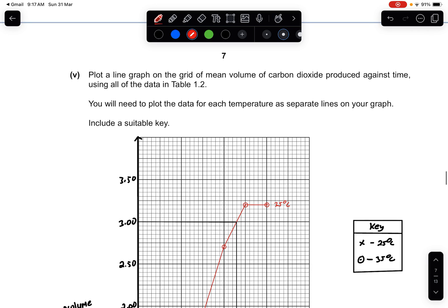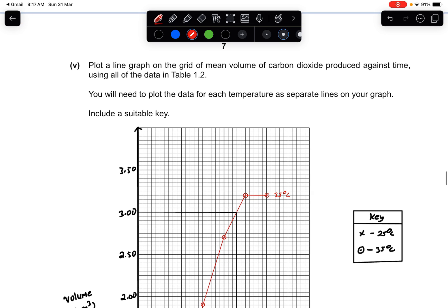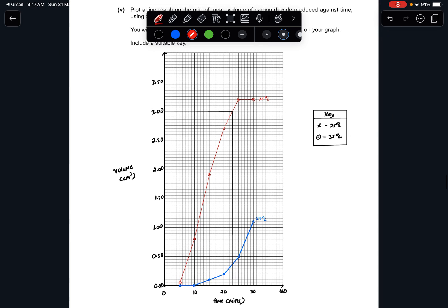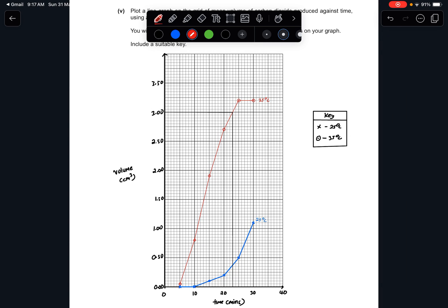Part 5: Plot a line graph on the grid of mean volume of CO2 produced against time using all of the data in table 1.2. You need to plot the data for each temperature as separate lines on your graph. Include a suitable key. So this is my graph. You can see there are two lines, and the key is needed. And then your correct axis, the correct plots, they contribute to the mark. So have a look. I'll give you 10 seconds to look at it.